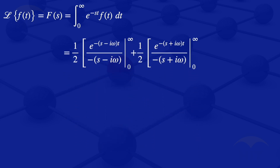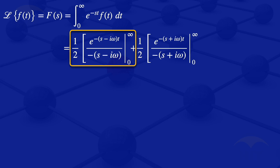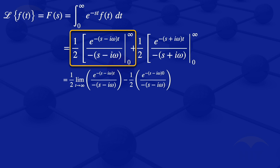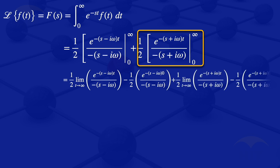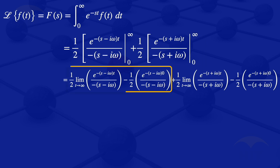We now substitute our limits. For the first term, the upper limit gives one half times the limit as t approaches infinity of e to the minus s minus i omega t divided by minus s minus i omega, and the lower limit gives minus one half times e to the minus s minus i omega times 0 divided by minus s minus i omega. Similarly for the second term, the upper limit gives one half times the limit as t approaches infinity of e to the minus s plus i omega t divided by minus s plus i omega, and the lower limit gives minus one half times e to the minus s plus i omega times 0 divided by minus s plus i omega.